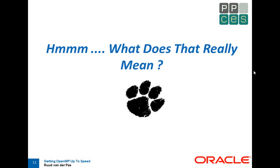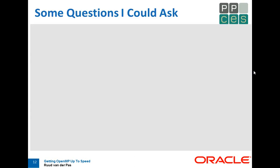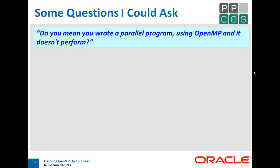So what does that really mean? I'm going to show you an imaginary discussion with an imaginary person that comes to me and says OpenMP does not scale. I'll show you part of the conversation. You come to me and say OpenMP does not scale. So I would ask: what I think you're trying to say is you wrote a parallel program, you used OpenMP, and it doesn't perform. That's really what you mean when you say OpenMP does not scale.